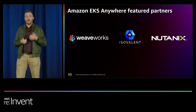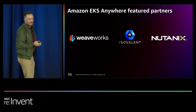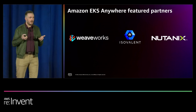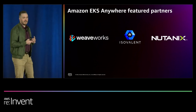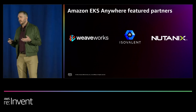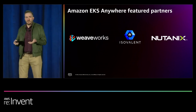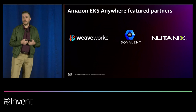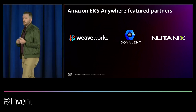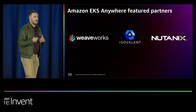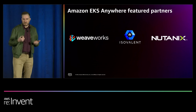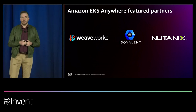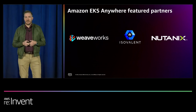We've worked with Weaveworks for years for not only EKS Anywhere but also EKS in the cloud. The second partner is Isovalent, the ISV that makes Cilium — our on-prem CNI. Kubernetes doesn't really come with a production-ready network overlay, so you have to pick one. We picked Cilium and we're really happy with that choice. They give us a version of Cilium and help us support it behind the scenes — if you open a ticket and it's a Cilium issue, our engineers check it out and if needed hand it to the Isovalent engineers, all happening behind the scenes.